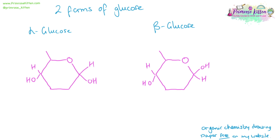The structures for alpha and beta glucose are very, very similar. But on the right-hand side, you'll notice that the hydrogen and the OH group are in different positions. In alpha glucose, the OH group is at the bottom, and in beta glucose, the OH group is at the top.